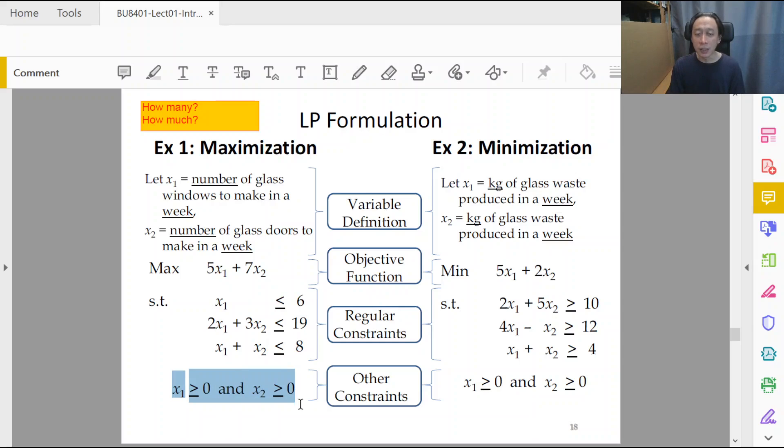Concerning the other constraints, we have non-negativity constraints. In the future, we might see integer constraints or binary constraints. These constraints arise out of the quantitative nature of the model. We will always require the variables to be non-negative, so we insert greater than or equal to zero.